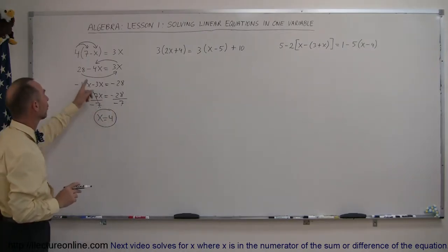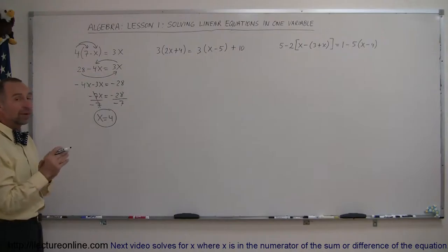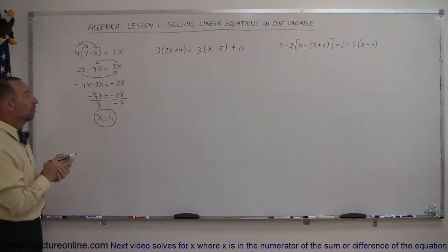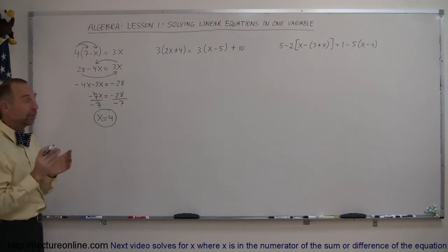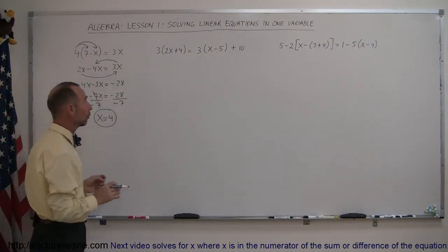And there's the answer for our first problem — x equals 4. When plugged in, it makes the left side equal to the right side. Looking at our second example, now we have two sets of parentheses, and again we get rid of the parentheses first.